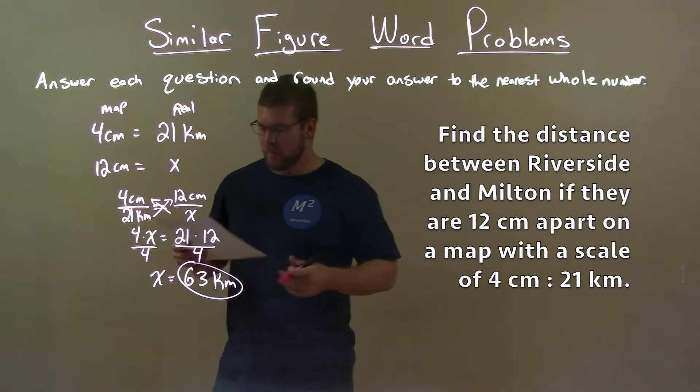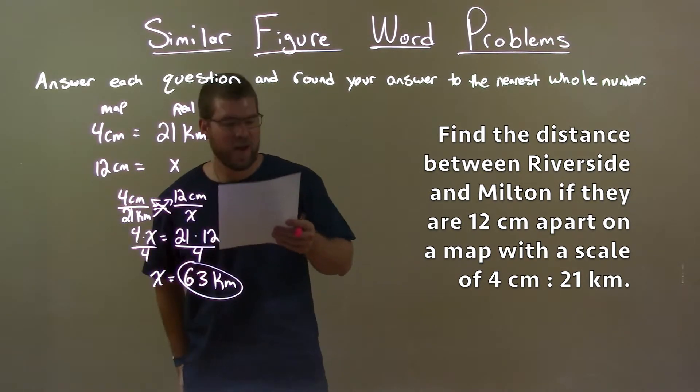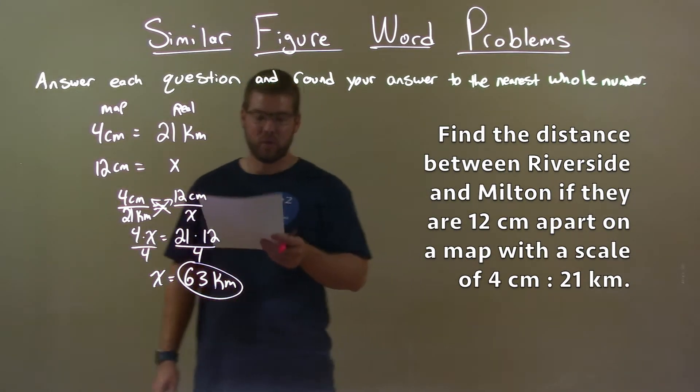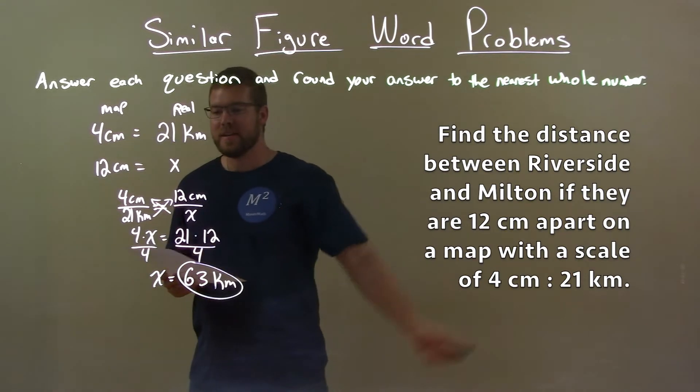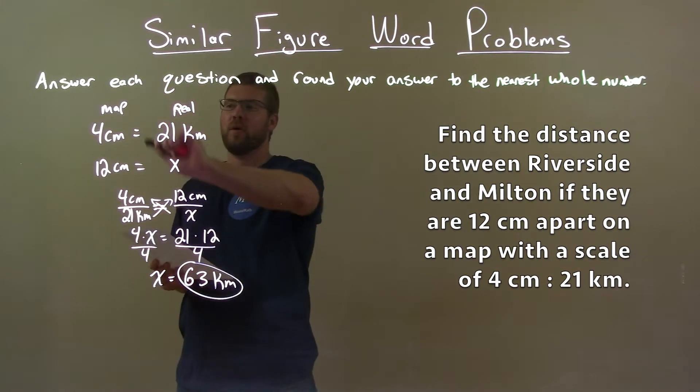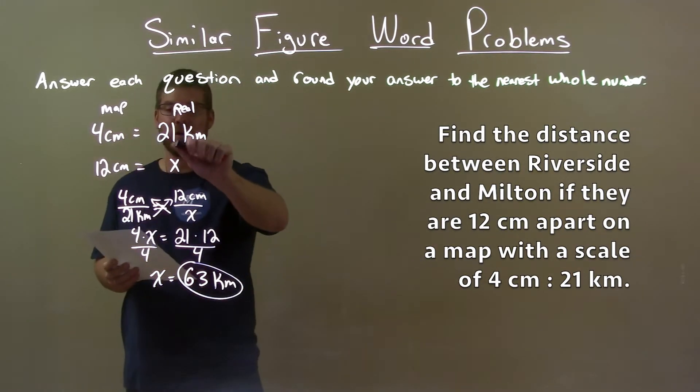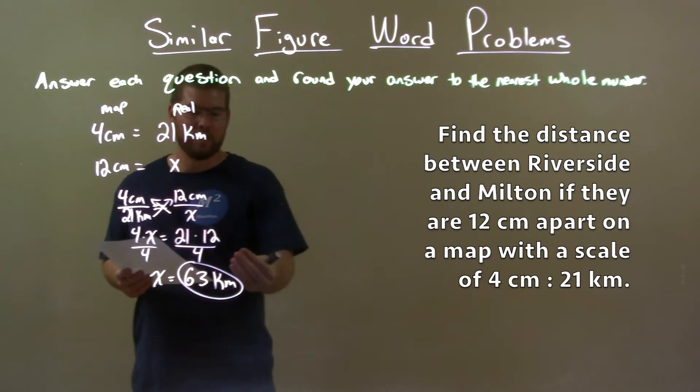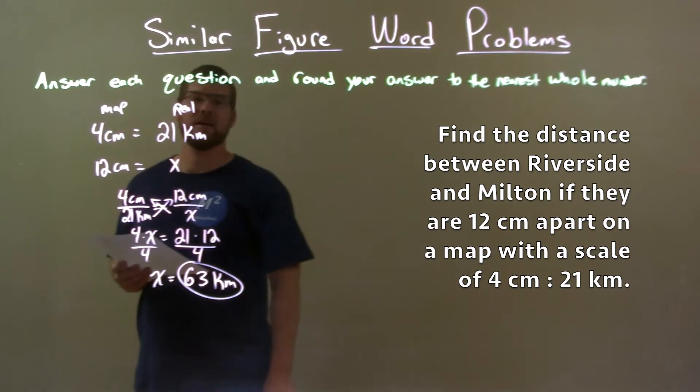Quick recap. We're given the word problem: Find the distance between Riverside and Milton if they are 12 centimeters apart on a map with a scale of 4 centimeters to 21 kilometers. We created our proportion with the scale that was given and our values for the map, 12 centimeters to x in real life. We set up a proportion and solved for the missing variable which came out to be 63 kilometers.